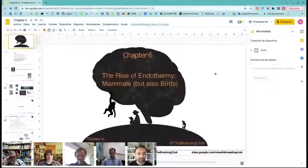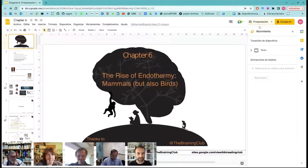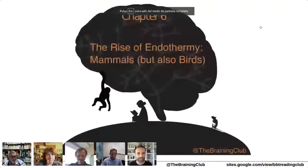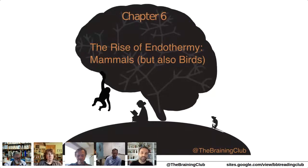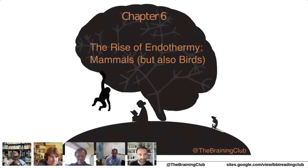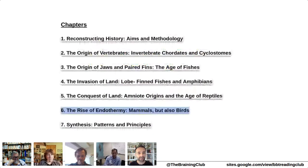Can you see the presentation? Yes. So I will start. As I said, we are discussing today Chapter 6 — it is the last chapter of the book with content about the vertebrate brain. The name is 'The Rise of Endothermy: Mammals, but Also Birds.' I will mainly talk about mammals, making comparisons with birds to give you a reference.